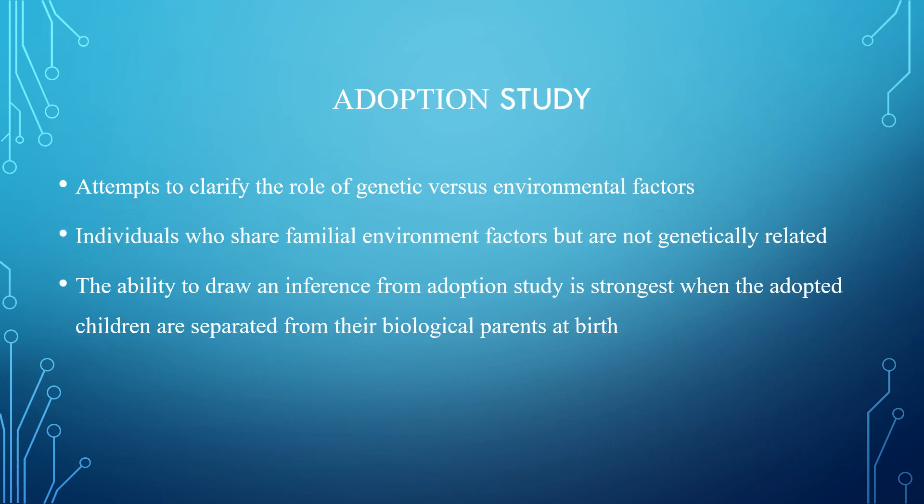The adoption study attempts to clarify the role of genetic versus environmental factors. It studies individuals who share familial environment factors but are not genetically related. The ability to draw inferences from adoption studies is strongest when the adopted children are separated from the biological parents at birth. One famous study is the Danish study related to schizophrenia, which showed that when biological parents have schizophrenia and the child is separated and lives with adoptive parents, the child still developed schizophrenia, proving schizophrenia is related to a gene disorder. Similarly, studies on alcohol showed that if a biological father is alcoholic, the biological son will develop alcohol dependence even without living with the father.